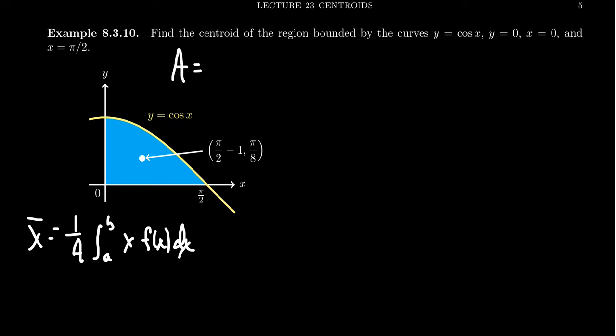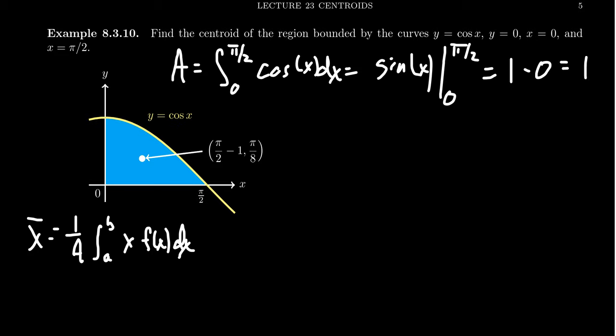The area under the curve we've done many times. We want to find the integral from 0 to pi halves of our function f of x, which in this case is cosine of x dx. The antiderivative of cosine would be sine of x. We have to evaluate from 0 to pi halves. Sine of pi halves is 1, sine of 0 is 0, so 1 minus 0, we get 1. So the area under the curve is just going to be 1.